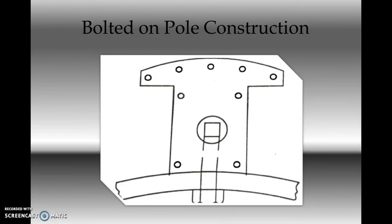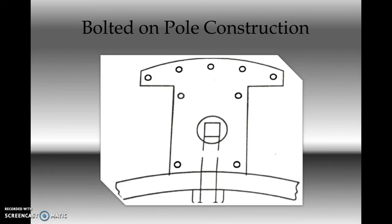This is a diagram for bolted-on pole type of construction. The projected pole is fixed on the outer rim of the rotor yoke. Here we can see that it is the rotor outer periphery and this projected pole is directly riveted or bolted on the outer periphery. It is one of the simplest types of construction, known as bolted-on pole type, used for 20 to 25 meters per second peripheral speed.